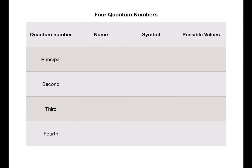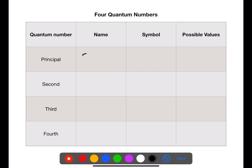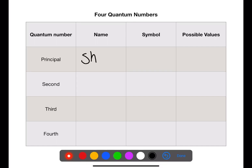Let's have a little look at the four quantum numbers first. The first quantum number is the principal quantum number and represents the electron shell. This is given the symbol n and has integer values of one, two, three, and four.